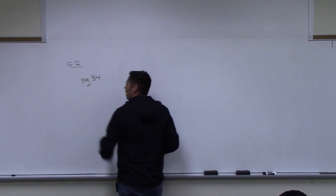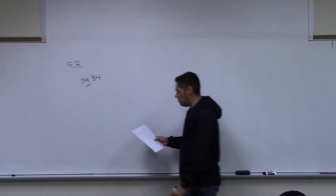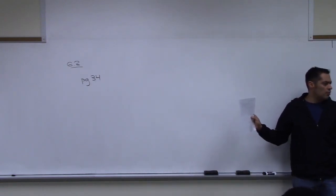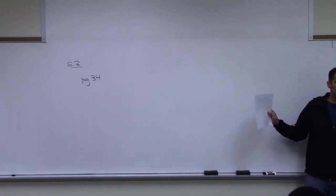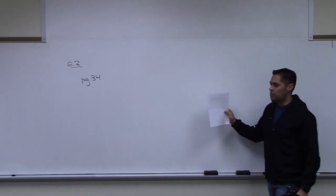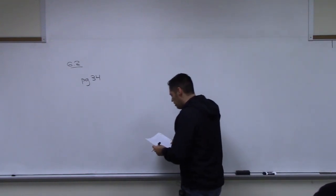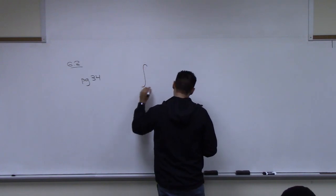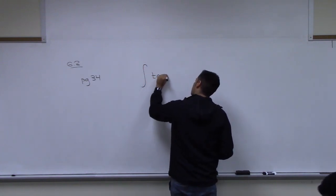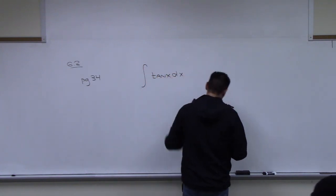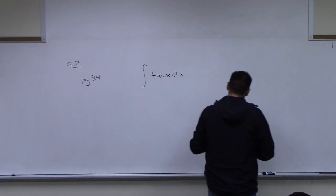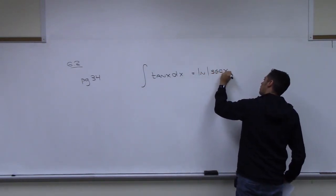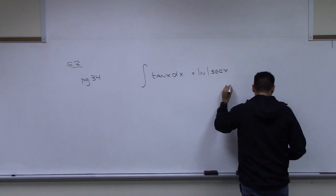If you have that, go ahead and look at it. If you don't, look off your neighbor. There are two boxed formulas there. The first one says the antiderivative of tan x is natural log of the absolute value of secant x, plus C.